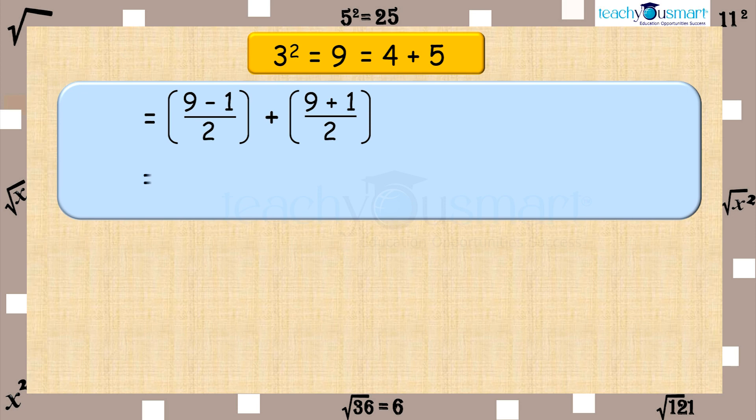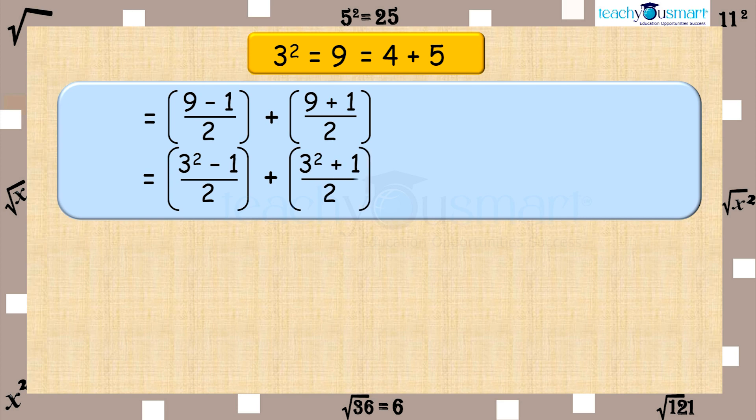Which is equal to (3 square minus 1) divided by 2, plus (3 square plus 1) divided by 2. Similarly, we can express the square of any odd number as the sum of two consecutive whole numbers.